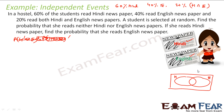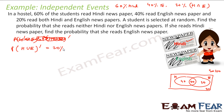This circle is Hindi and this circle is English. Hindi and English intersection is 20%. Assuming 100 students: H ∩ E = 20, total Hindi = 60, so Hindi only = 40, total English = 40, so English only = 20. That leaves 20 students outside both circles — those who read neither. So there are 20 students who don't read Hindi or English.